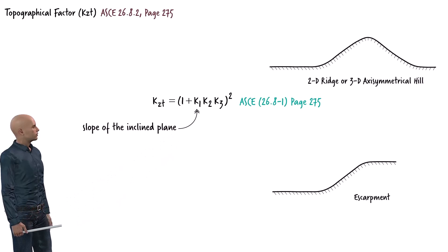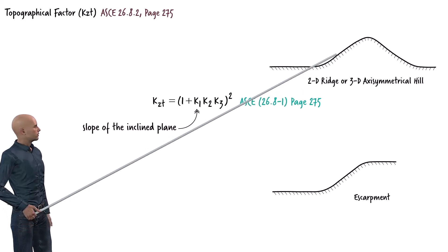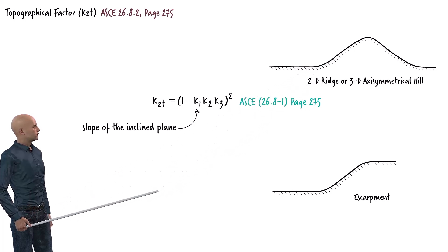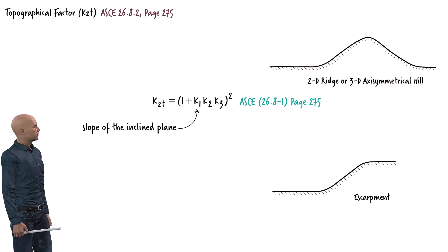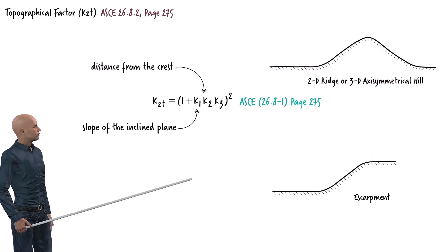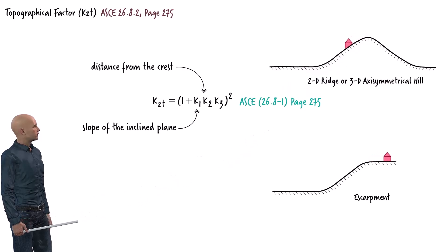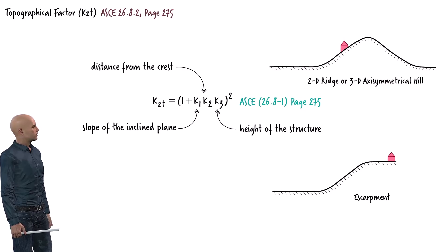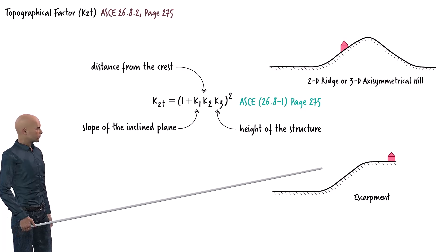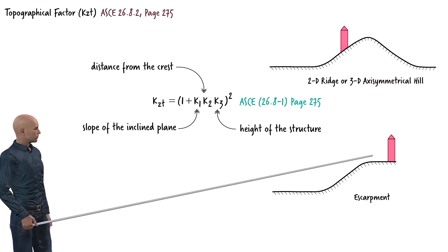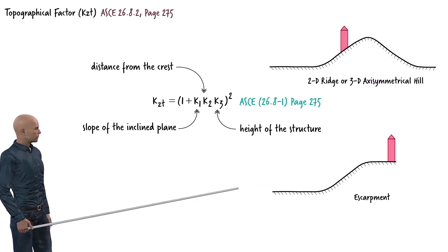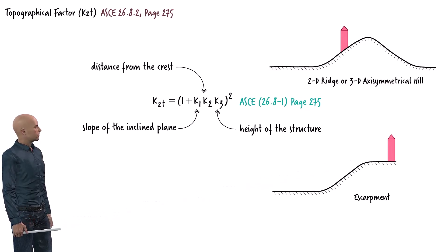K1 deals with the slope of the hill. A steeper slope means faster wind and higher pressure on the structure, so K1 captures how steepness affects wind speed. K2 is about the structure's location relative to the hill's crest — the further you move from the crest, the less wind pressure there is. K3 considers the height of the structure, as wind pressure tends to decrease as you go higher, so K3 reflects how pressure changes with elevation.